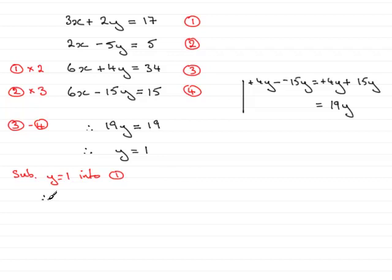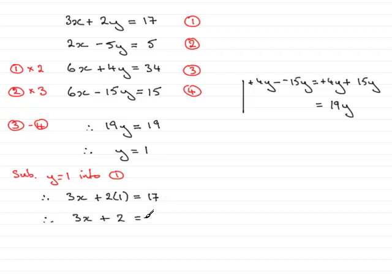So therefore we have 3x plus 2 times y, which is 1, equals 17. Tidying this up, we then have 3x plus 2 equals 17. Subtracting 2 from both sides gives 3x equals 15. And then dividing both sides by 3 gives x equals 15 divided by 3, which is 5.